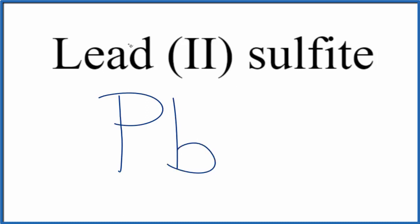The 2, though, that tells us that the lead, this Roman numeral 2, tells us the lead is 2+. So that's really useful information. Lead's a transition metal, and this tells us that we have 2+.